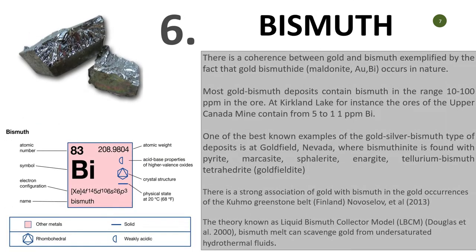Number six is bismuth. Bismuth is one of the best known examples — gold-silver-bismuth type deposits — which can be exemplified using deposits from Nevada. There is a coherent relationship between gold and bismuth in most cases, and studies have shown that bismuth can range between 10 to 200 ppm in most deposits. Bismuth is strongly associated with gold and is another element you do not want to miss.